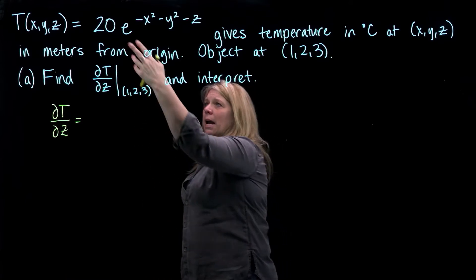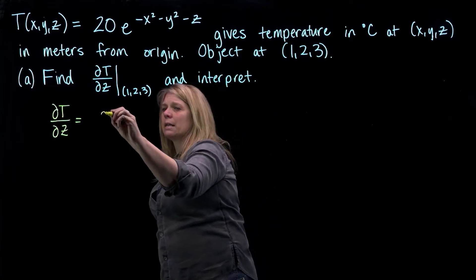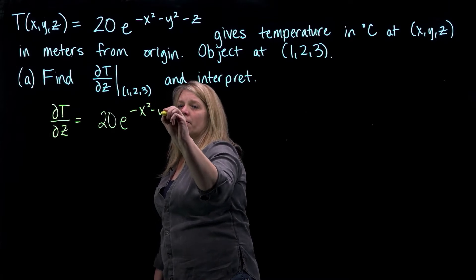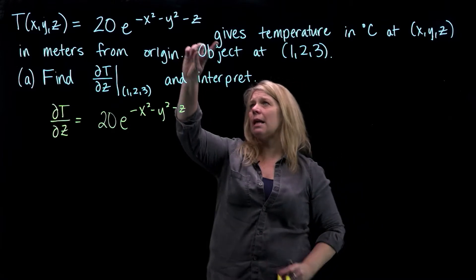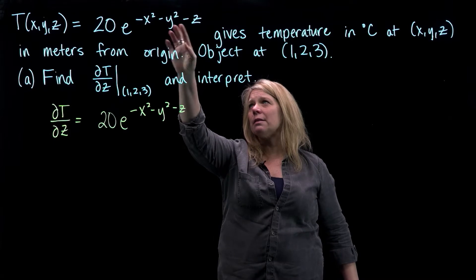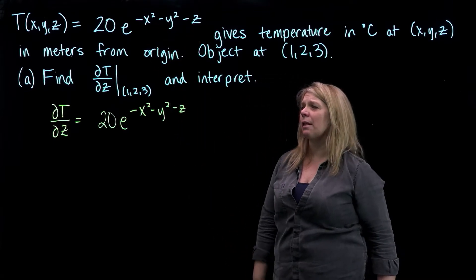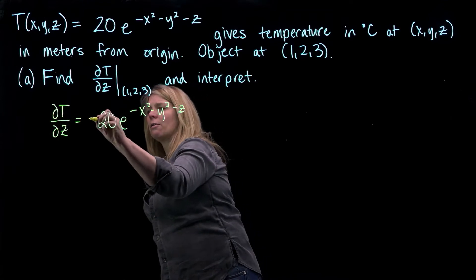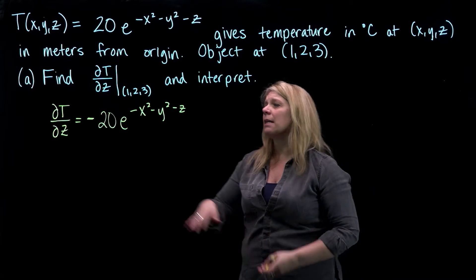I have my constant out front, and then e to this variable power, so I'll have 20 times e to this variable power, times the derivative of what's in that exponent. Since I'm differentiating with respect to z, notice I have something slightly different going on in the x and y terms in that exponent than the z term. The derivative of that z term will just be negative 1, so all of this times negative 1 — we can put a minus out front. That's ∂T/∂z.